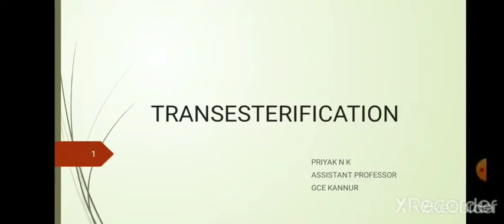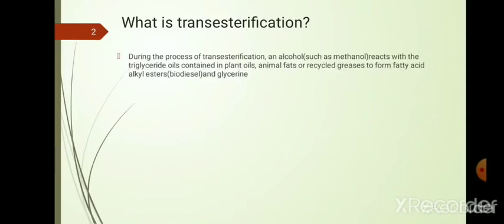Today we will discuss one of the chemical methods for converting biomass — especially oil seeds, animal fat, etc. — into biodiesel: transesterification. Transesterification is the process of converting triglyceride oils, which are found in plant oils, animal fats, and even recycled oil and grease, with the help of an alcohol — mostly methanol, sometimes ethanol — to produce fatty acid alkyl esters, known as biodiesel. Glycerin or glycerol is also obtained as a byproduct.